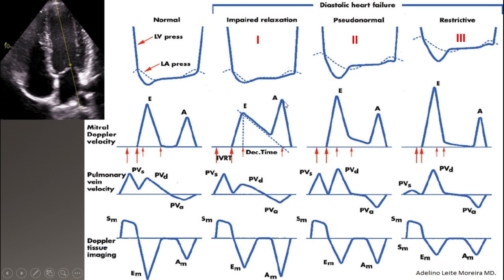Even though during atrial contraction pressure in the atrium goes higher than normal, the mean left atrial pressure stays in the normal range and does not increase. That is why this stage of diastolic dysfunction is called impaired relaxation, and left atrial pressure will be normal.